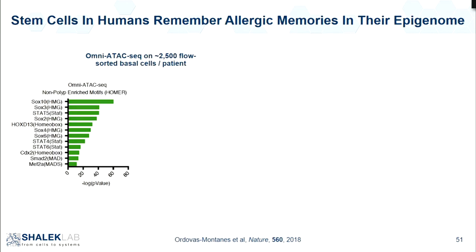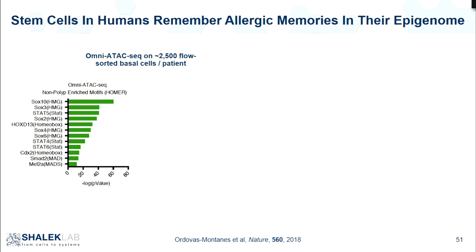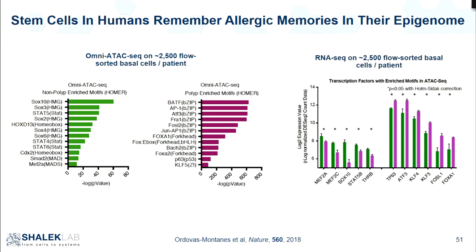How is this memory being stored? It's not in the RNA, because RNA is ephemeral. When we go look at the epigenetics using accessible chromatin, in our non-polyp samples we have all of these stem-like factors like SOX family members, whereas in our polyp-like samples when we focus on our basal cells we see a strong enrichment for inflammatory motifs. This holds true at the RNA level as well — so it's not just the accessibility that's different, it's also the gene expression.